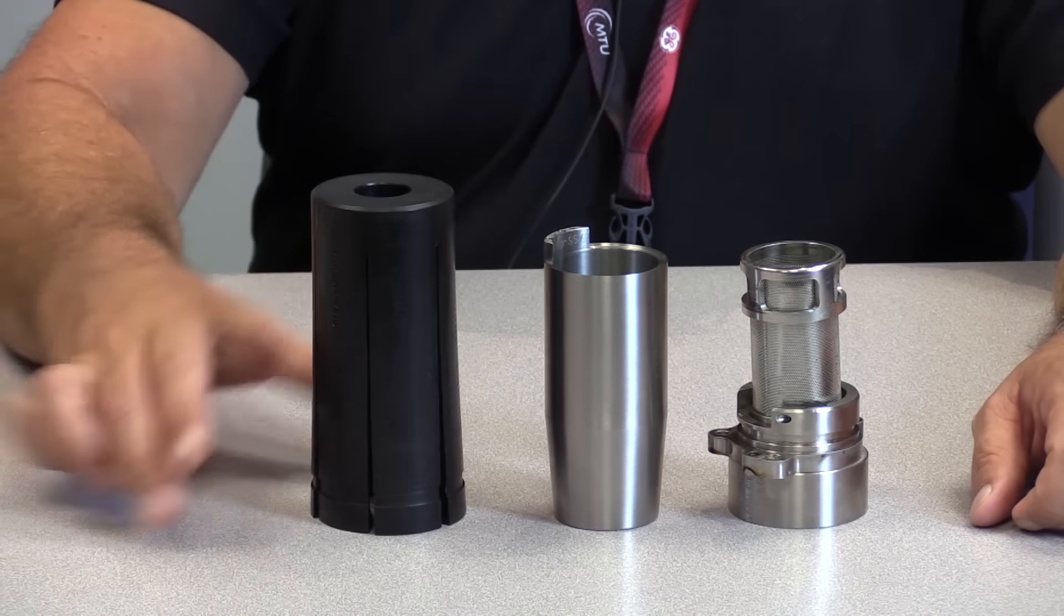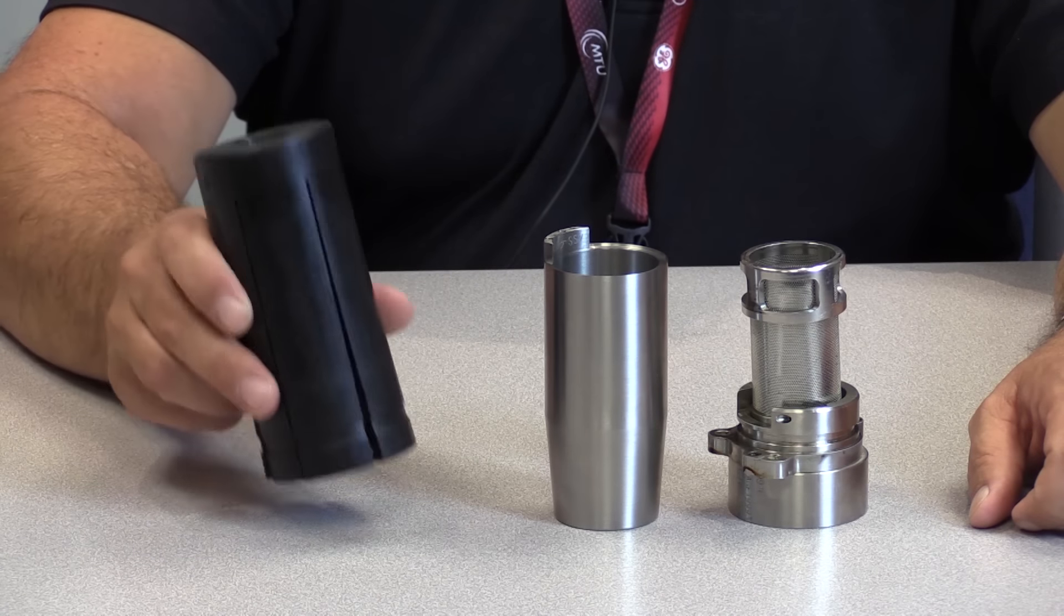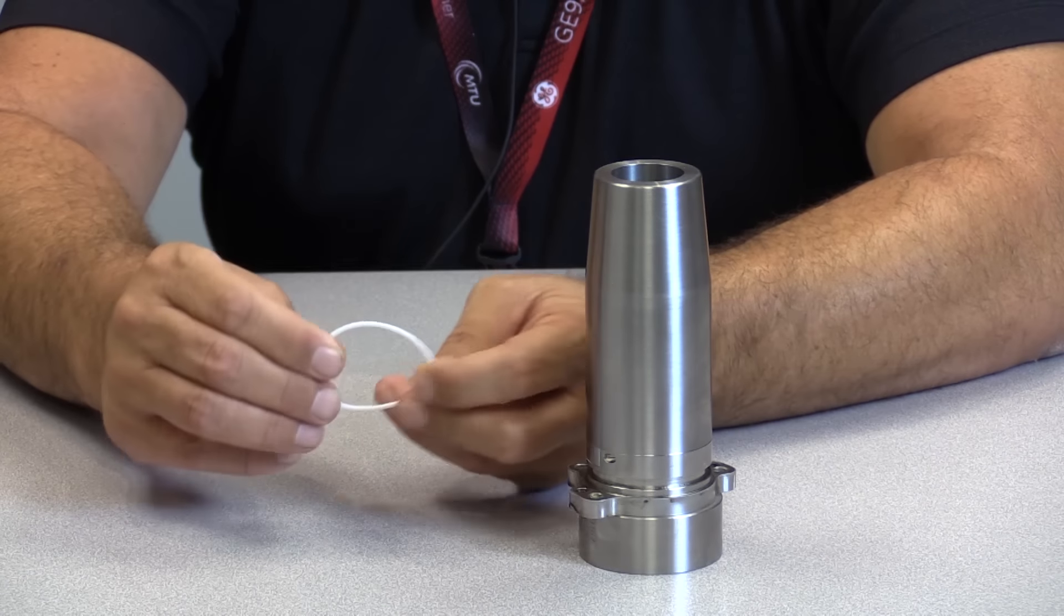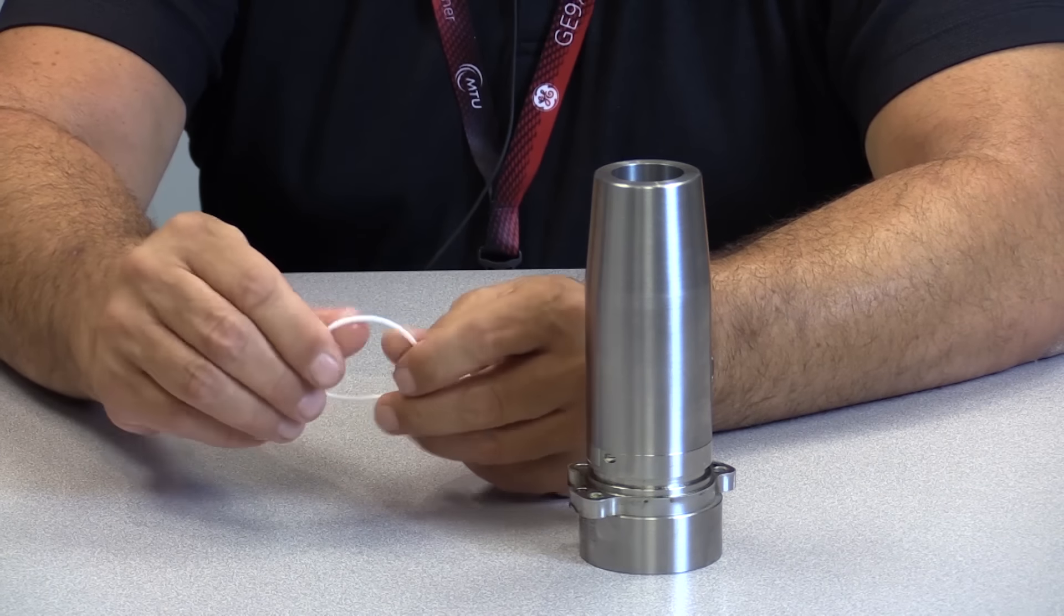And then, finally, this plastic pushing device. So, right now, I'm going to lubricate the backup ring itself with our white petroleum jelly. Make sure it's nice and slick.